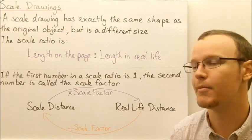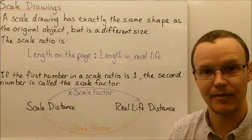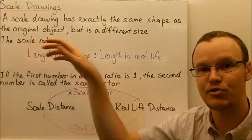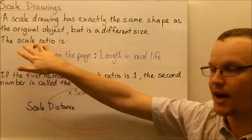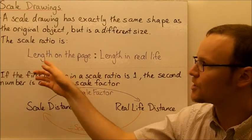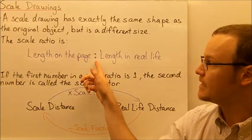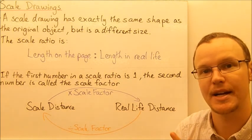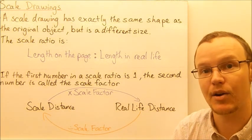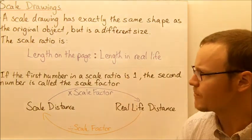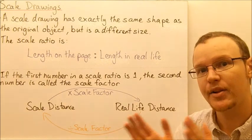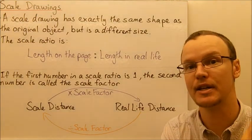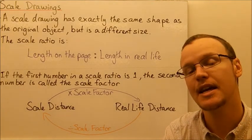Scale drawings and scale models are examples that use scales and ratios. The most important ratio for any scale drawing or scale model is called the scale ratio. It shows the length on the page or on the model compared to the length in real life — so one side of the ratio is the distance on the page or model, and the other side is that comparative length in real life.